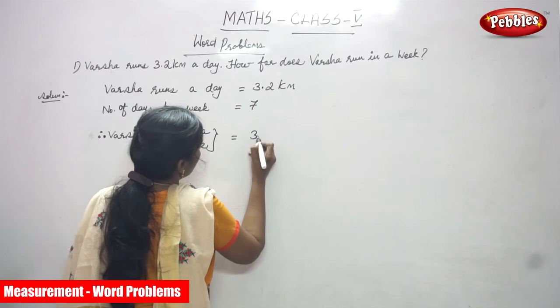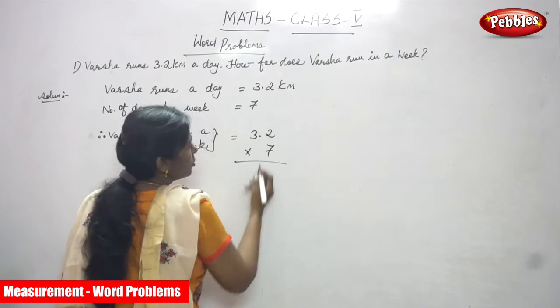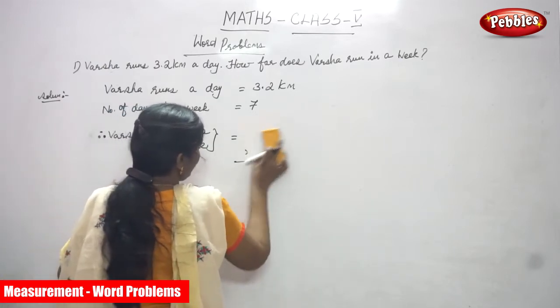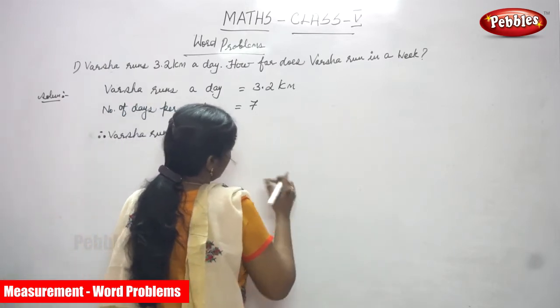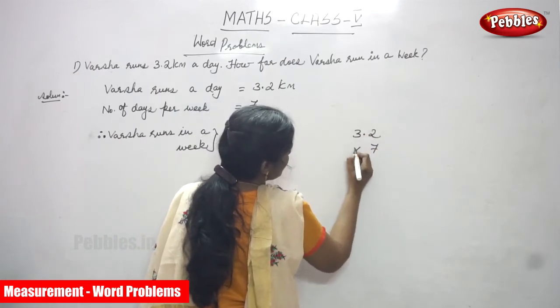So 3.2 into 7. That is multiplication. I will do one thing, write it in the corner. So 3.2 into 7.